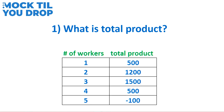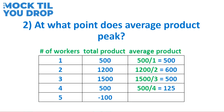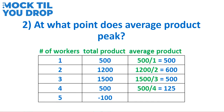Now that you have a better understanding of total product, let's discuss average product. One thing to keep in mind is that total product doesn't really show us how efficient a firm is generating output. Average product, on the other hand, gives us a better idea of how many workers are most efficient. In this case we can see that two workers have an average product of 600 baskets — you just take the total product and divide it by the number of workers. So while one worker can make 500 baskets, two workers can make on average 600 baskets each. Perhaps the two workers just make each other more efficient, or with three workers there's just not enough tools to go around.